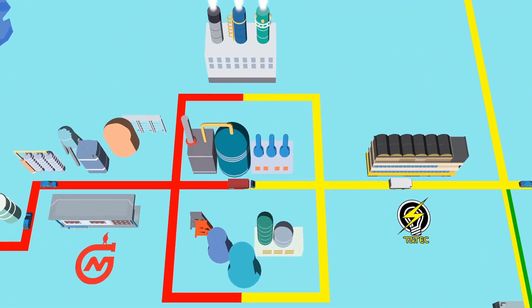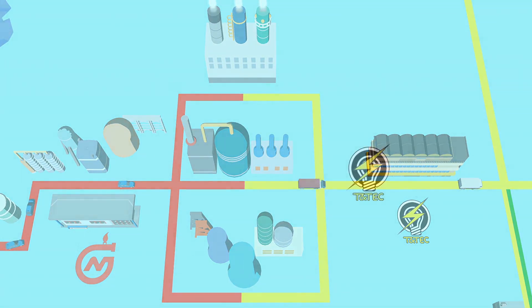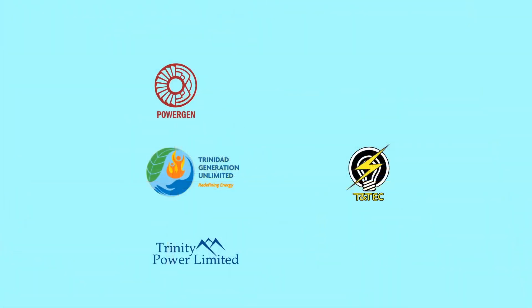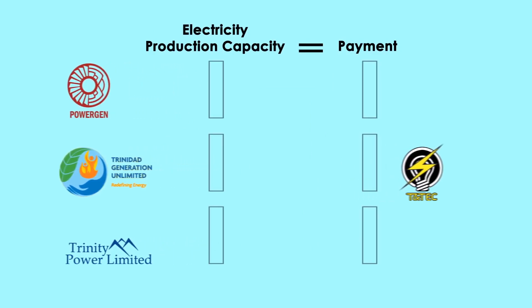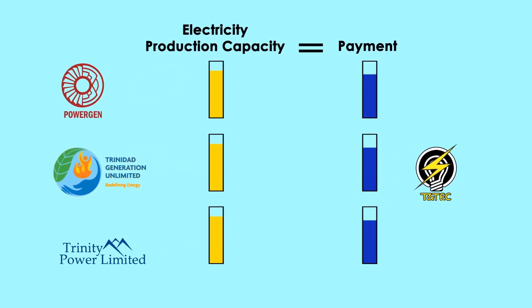There are also significant energy efficiency opportunities where electricity is generated, which is known as supply-side efficiency. Power purchase agreements, which are the contracts that exist between our independent power producers and T&TEC, ensure that IPPs get paid based on the amount of electricity they have the capacity to produce, rather than the amount of electricity they actually produce.